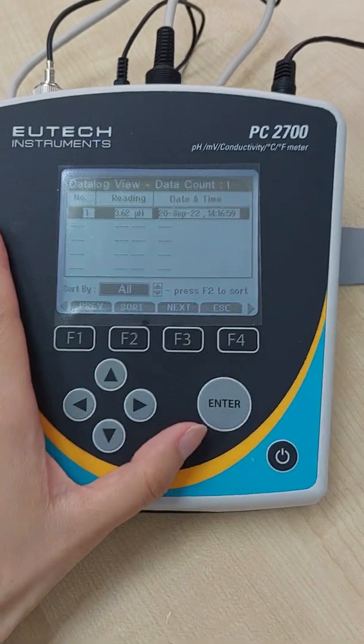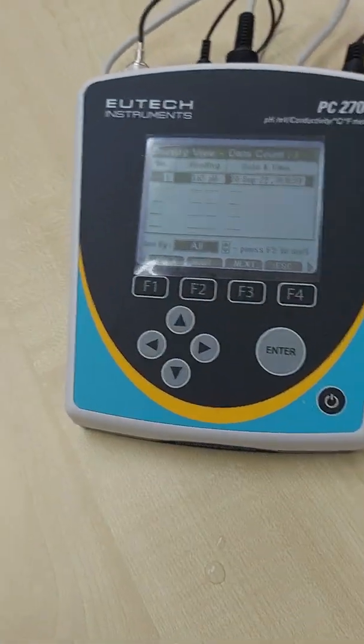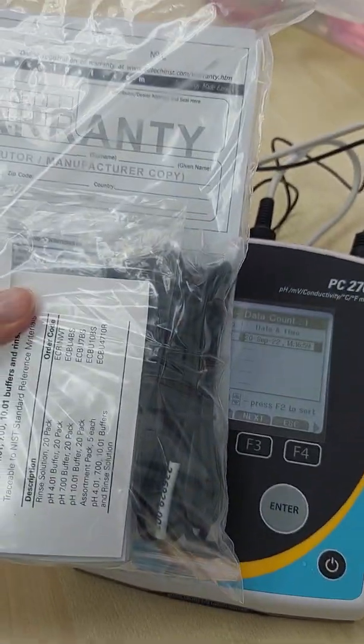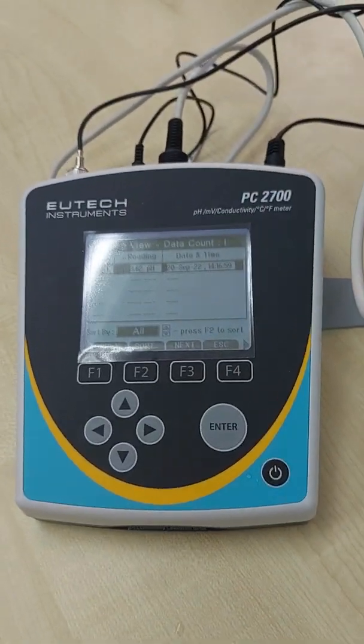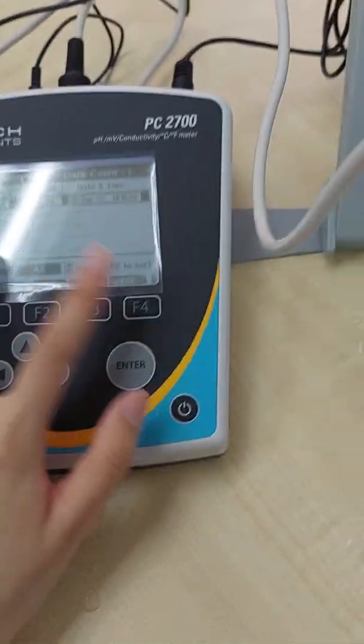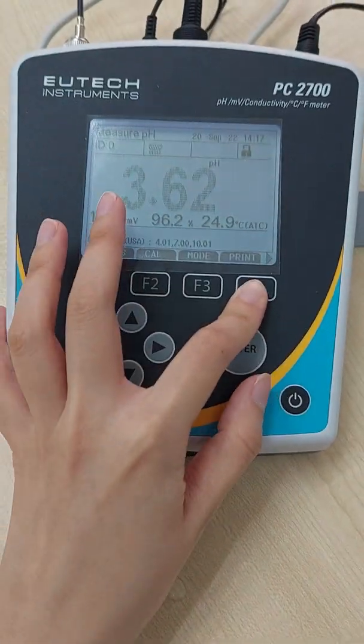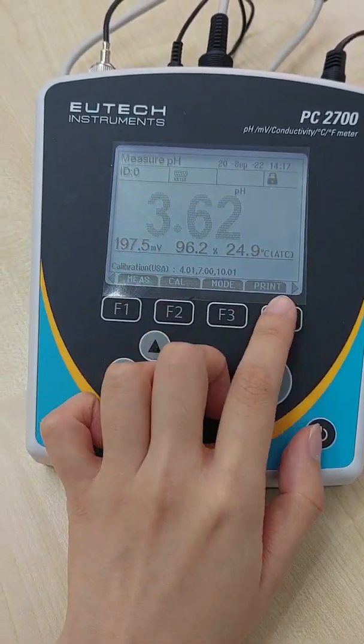So also this meter provides an RS-232 cable for you to connect to PC for data transfer. You can also connect to printer as well. Like print mode right here.